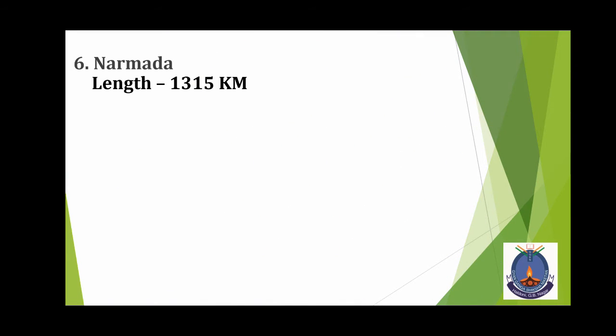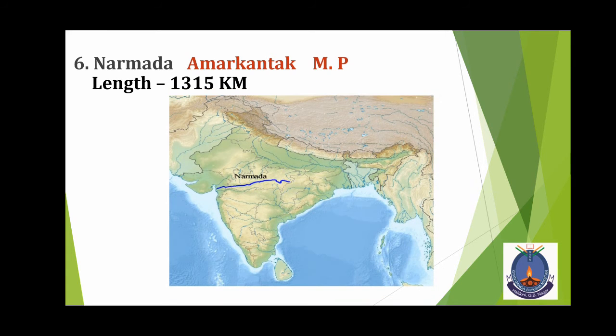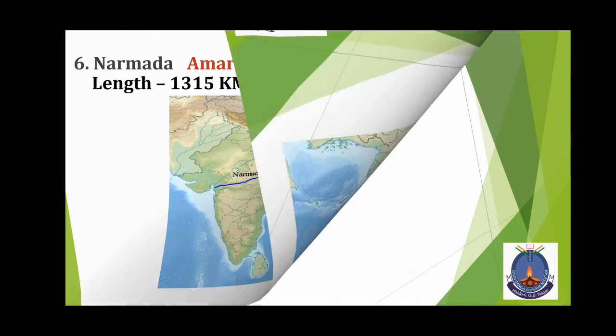Narmada. इसका origin कहां से होता है? Amarkantak, Madhya Pradesh से। Length कितनी है? 1315 km. आप देखें dark blue color में Narmada River है।